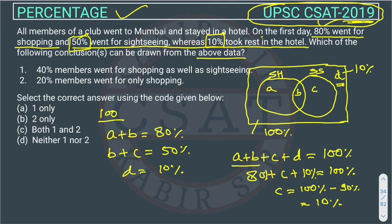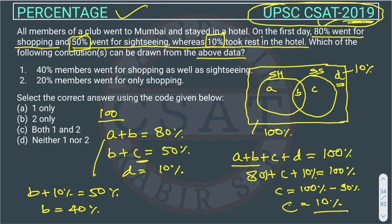In percentage we can do addition and subtraction. So C equals 10%. If we put the value of C into B plus C equals 50%, we get B equals 40%. Then putting B equals 40% into A plus B equals 80%, we get A equals 40%. So A is 40%, B is 40%, and D is 10%.